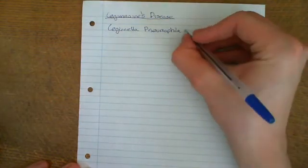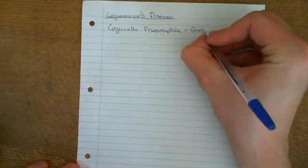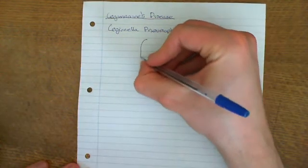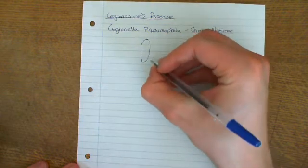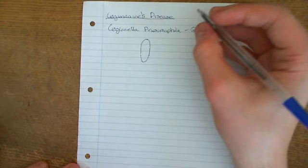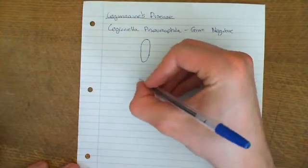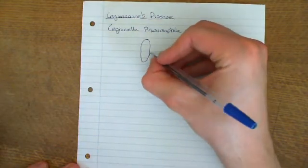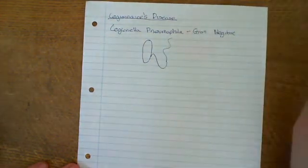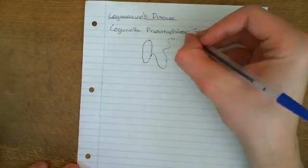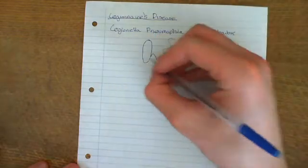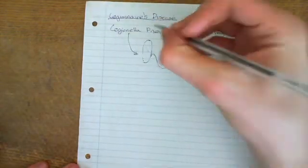It's gram-negative and it's a rod. I'll draw you a picture of what it looks like. It has a flagellum not coming off from the tip like cholera had, but coming off the side. Flagellum is the singular, flagella is the plural. This is a picture of Legionella Pneumophila.